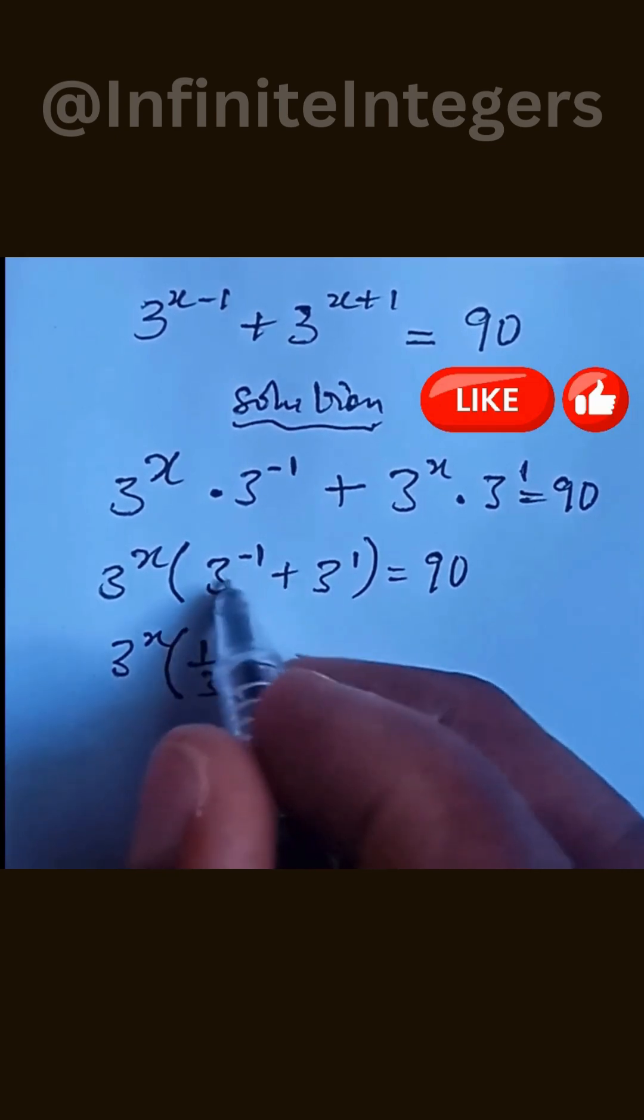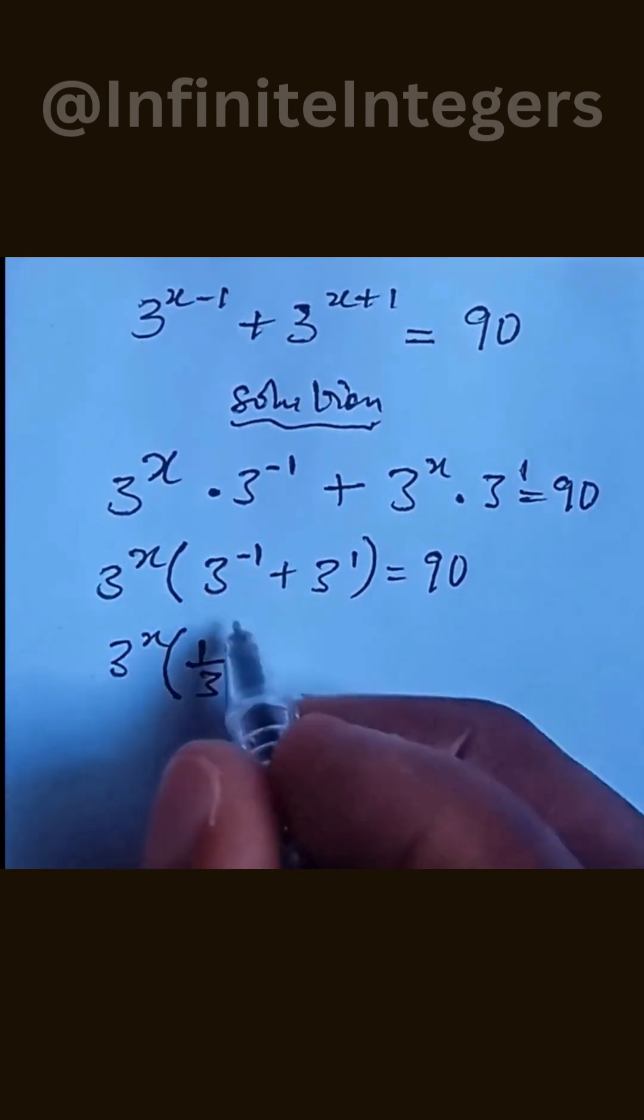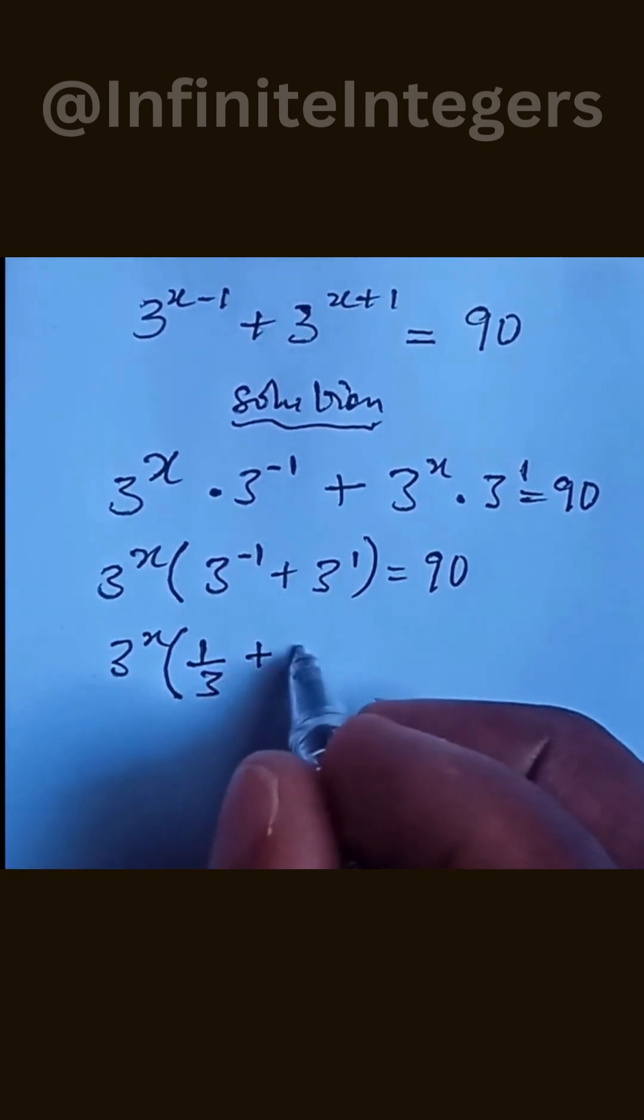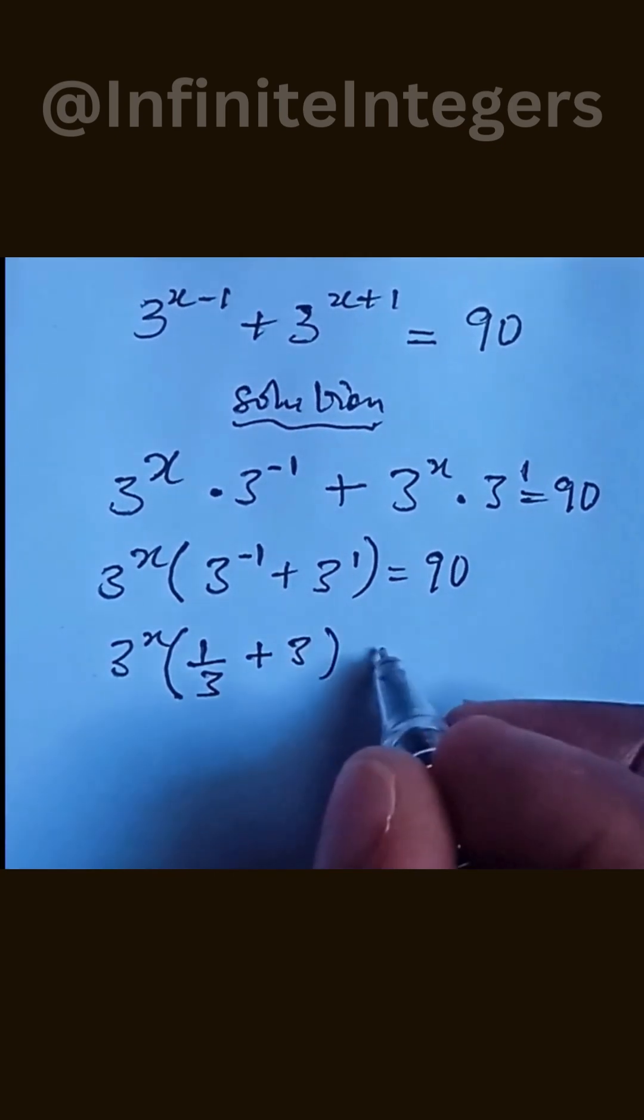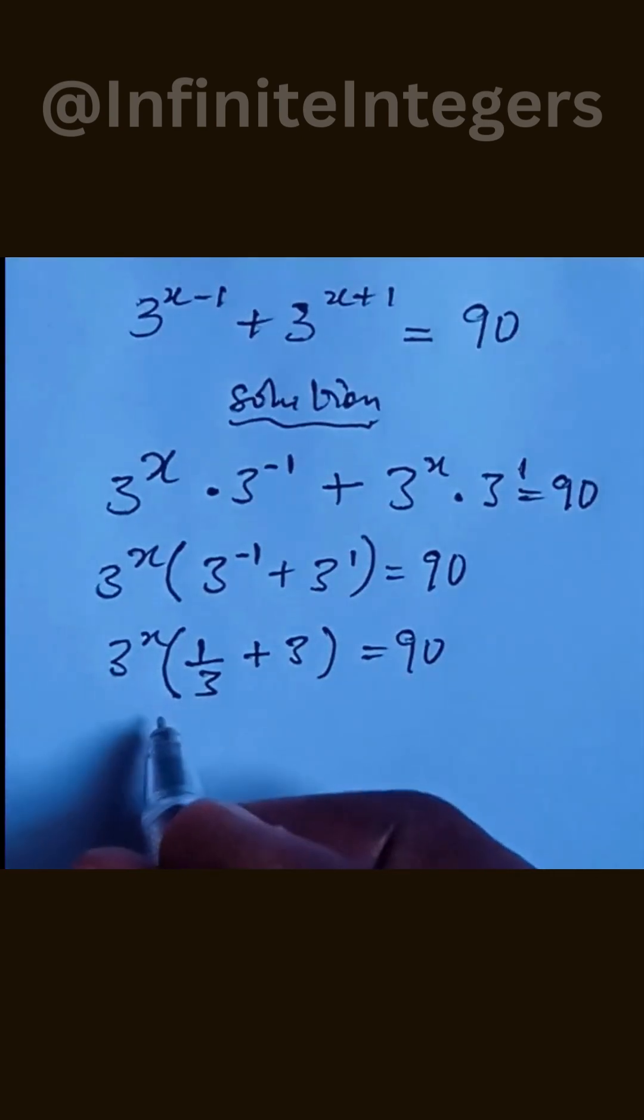This 3 to the power of minus 1 can be written as 1 over 3, plus 3 ordinary 3 into bracket, equal to 90.